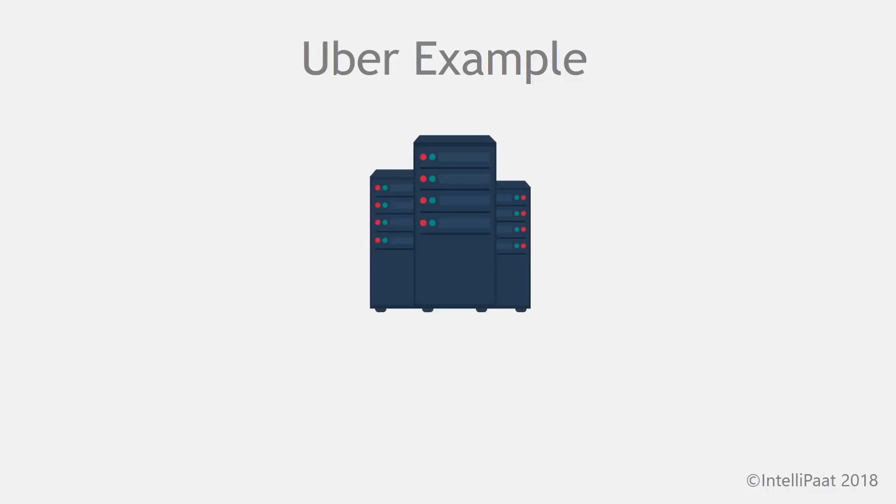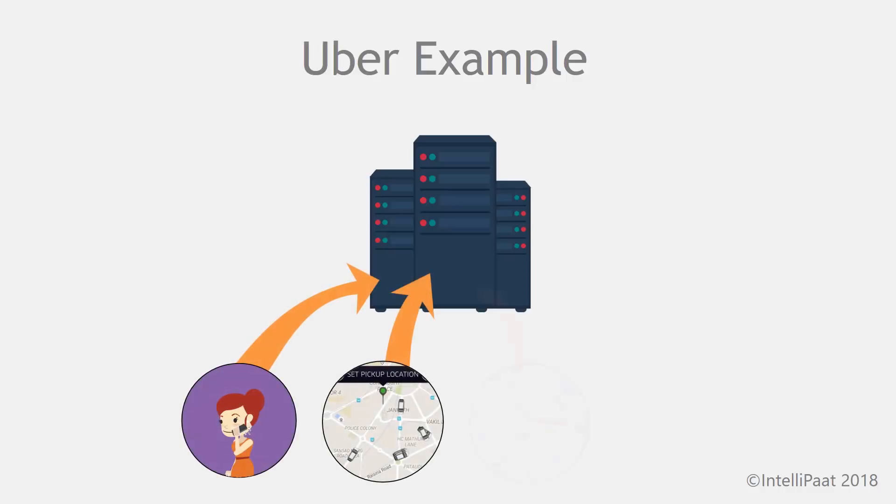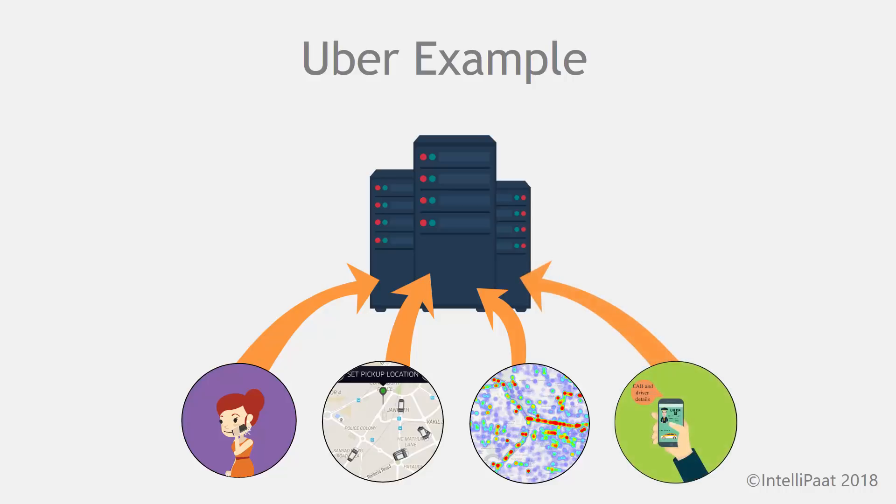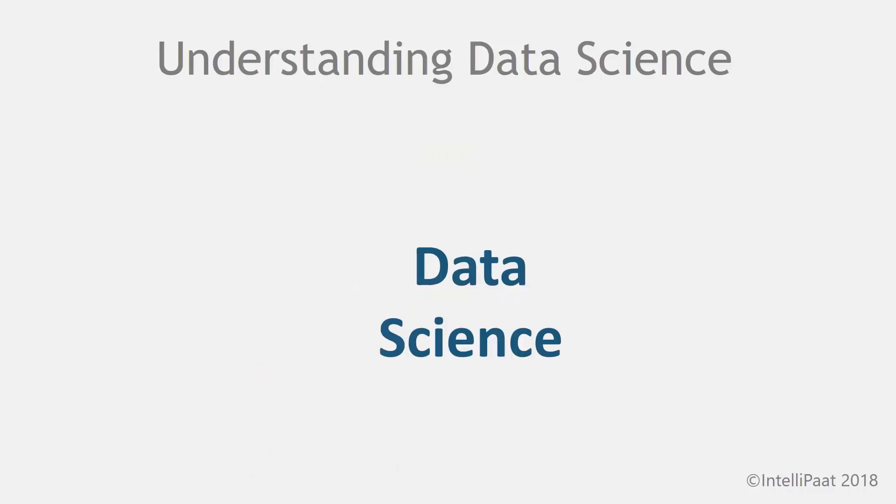But in the background, the seemingly simple task is carried out by collecting mountains of data from various sources, like the phones, the map, and historic trends of traffic and demand for rides. With this data, modern-day computers are programmed to calculate the nearest driver to you, the best route to your location and destination, the time it will take, and what you should pay. In other words, this is made possible with data science.